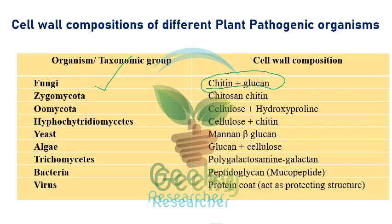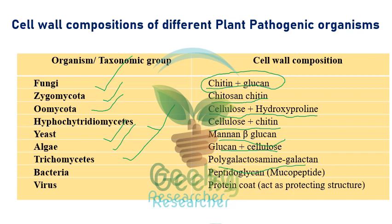Oomycota, a chromista group, is composed of cellulose and hydroxy proline. Hypochytridium mycetes cell wall is made of cellulose and chitin. Yeast cell wall is made up of mannan and beta glucan — this was asked around 2018 or 2019. Algal cell wall is composed of glucan and cellulose. Trichomycetes cell wall is made up of polygalactosamine and galactone.